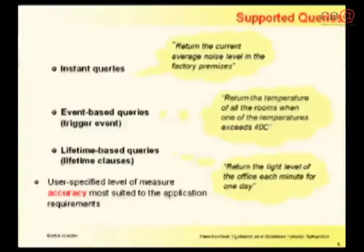As the middleware has to support different user needs, our proposed middleware can support different query types. For example, instant queries — a user may ask the system to return the current average noise level in the factory premises. This middleware can also support event-based queries or lifetime-based queries. In all these situations a user must be able to specify the level of accuracy most suited to the application scenario.